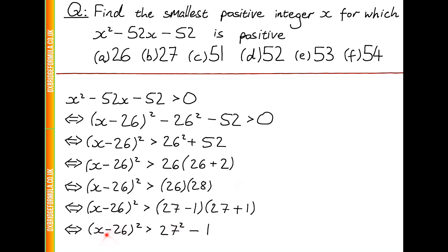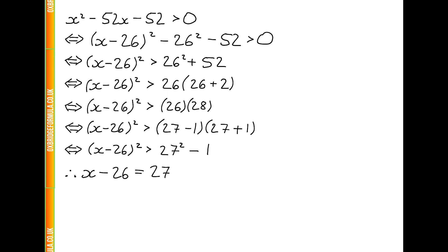And since we're only dealing with integers, we're therefore going to need x minus 26 all squared to be equal to 27 squared. And since x has to be positive, we can see that this can only happen if x minus 26 is equal to 27.